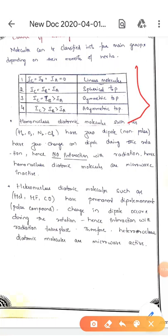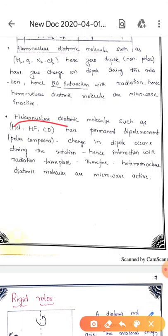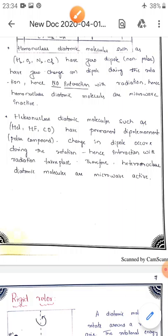This table briefly summarizes the conditions for linear, spherical, symmetric, and asymmetric top molecules. Restricting to diatomic molecules: homonuclear diatomic molecules have zero dipole moment and are non-polar, so there is no interaction with radiation — they are microwave inactive. Heteronuclear molecules like HCl, HF, and CO have a permanent dipole moment; polarity changes during rotation, hence interaction with radiation takes place, making them microwave active.